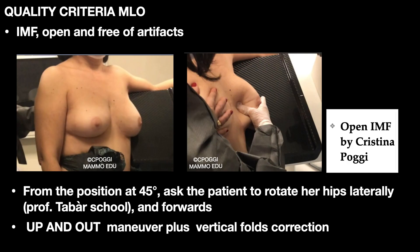With regard to IMF documentation from positioning the patient at 45 degrees, we have to make the patient's hips rotate laterally towards the detector and forwards. To open the IMF it is important to perform properly the up-and-out maneuver and correct the default faults in the way we had already talked about in the second lesson — the link is here at the end of this one.